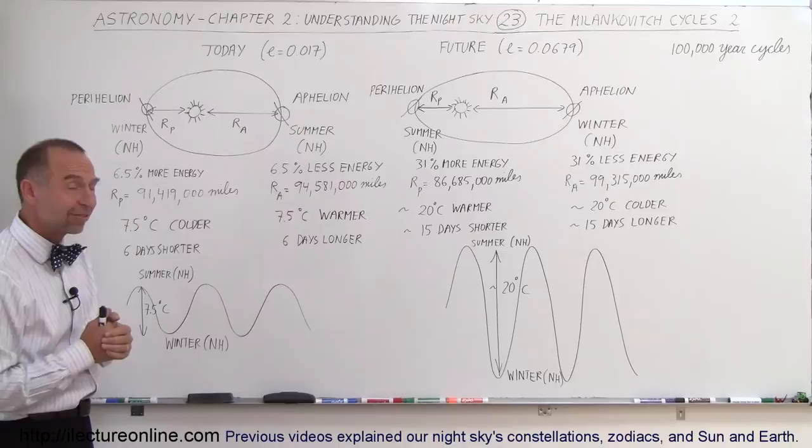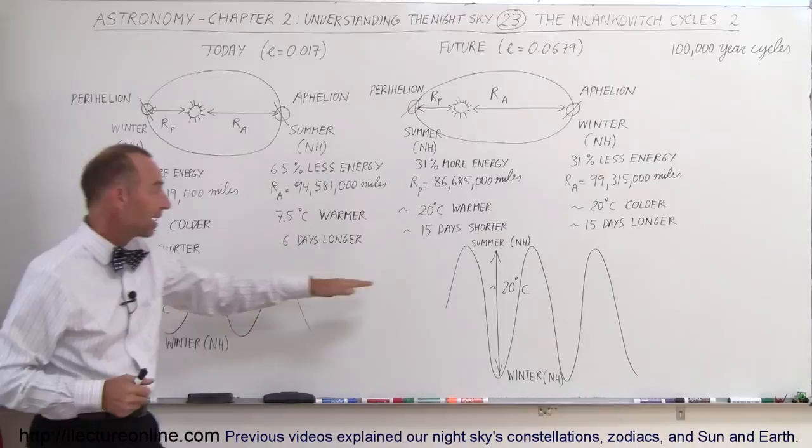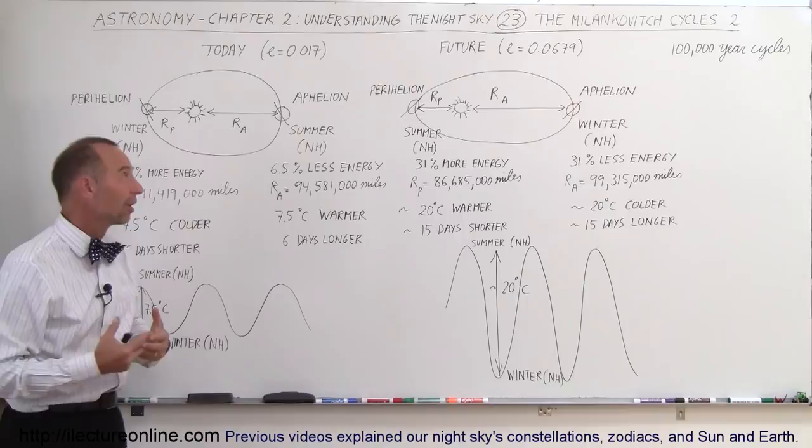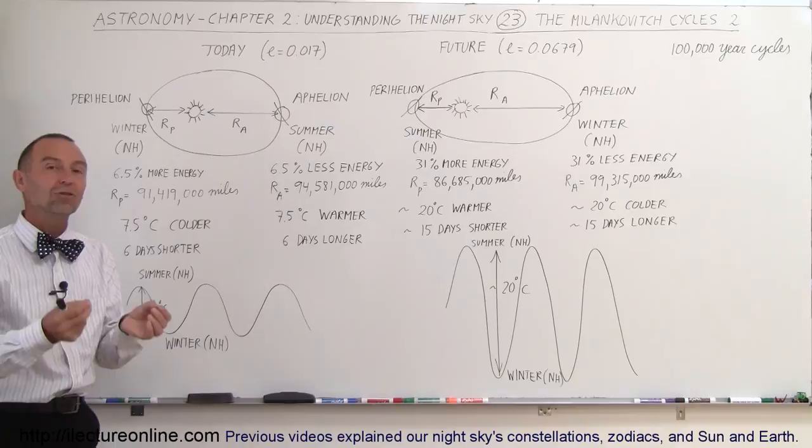So yes, the orbit of the Earth is a very big factor on the climate of the Earth, and you can see a very big factor on the temperature changes on the Earth. Things are now very mild because of the fact that we are closer to the Sun in the Northern Hemisphere winters and farther away in summers.